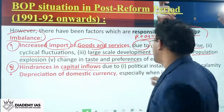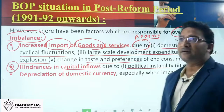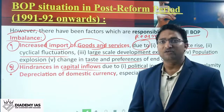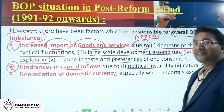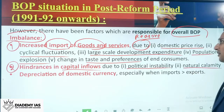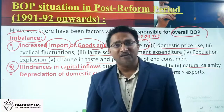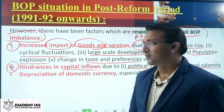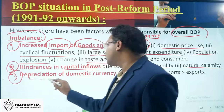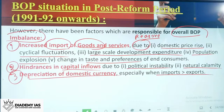The second factor causing BOP imbalance is hindrances in capital inflows due to political instability. India saw coalition governments for a long period, which made foreign investors hesitant. Natural calamities like the Uttarakhand disaster, Mumbai floods, and Chennai floods also cause foreign investors to hesitate. Additionally, depreciation of the domestic currency makes imports cheaper and exports more expensive.